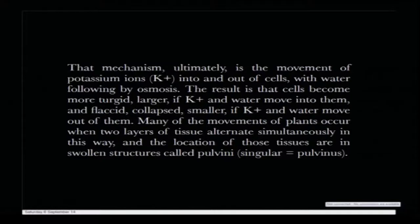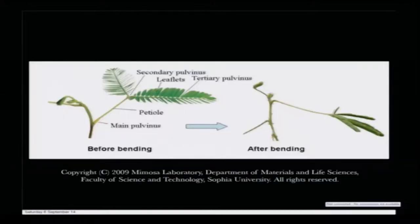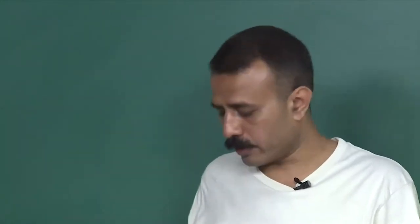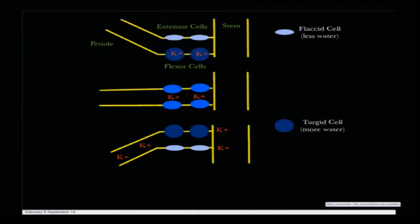The result is that the cell becomes more turgid and larger if potassium and water move into them, and flaccid or smaller if potassium and water move out of them. Many of the movements of plants occur when two layers of tissue alternate simultaneously in this way, and the location of those tissues is in the swollen structure called pulvinus. One layer allows entry while the other allows reverse entry. Importantly, if this kind of movement of ions takes place, you can actually record this electrical motion.